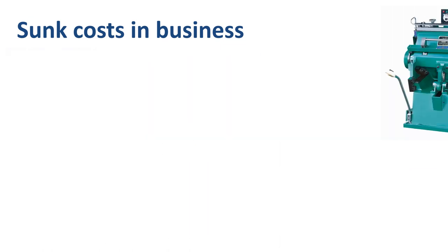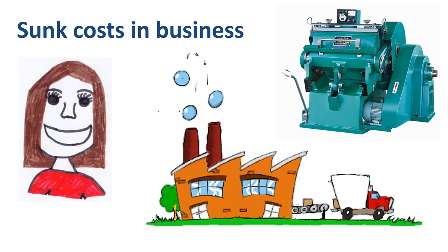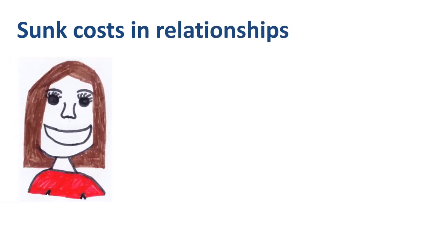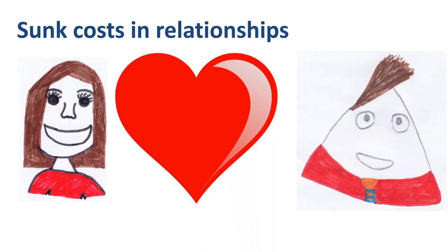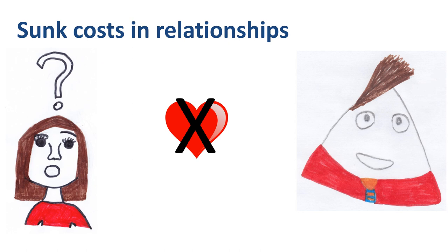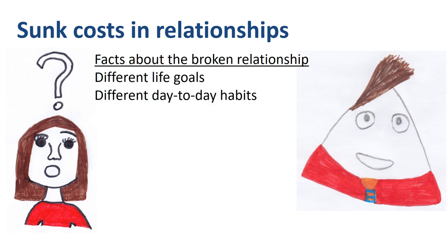Jane is very rational and decisive in a business environment, but not as well balanced in other domains such as her romantic relationships. Jane met Jim a few years ago, they fell madly in love, and started their relationship in high spirits. Over the years, the initial euphoria has died down to the point where Jane asks herself whether there is any basis left for continuing the relationship. The facts are that Jane and Jim have different life goals, different day-to-day habits, no plans to get married, and no kids.